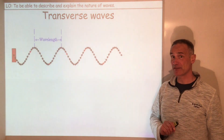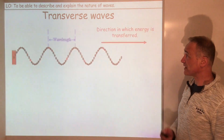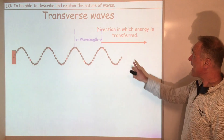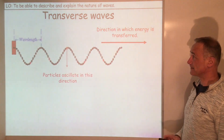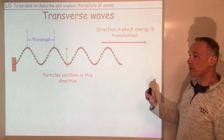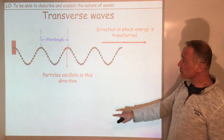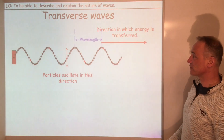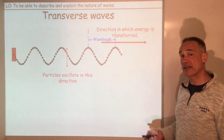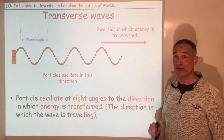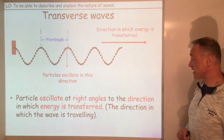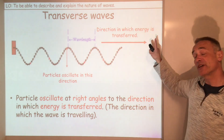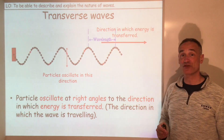Now there are two types of waves. The first one we're going to look at are transverse waves. As you can see the wave is moving this way — this is the direction in which energy is transferred. Now if you look at one of those red spots, you will see that these particles are just oscillating up and down at right angles to the direction in which the wave travels. That is a transverse wave. So particles oscillate at right angles to the direction in which energy is transferred.